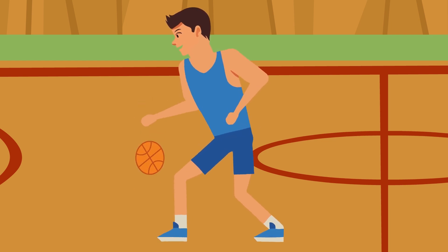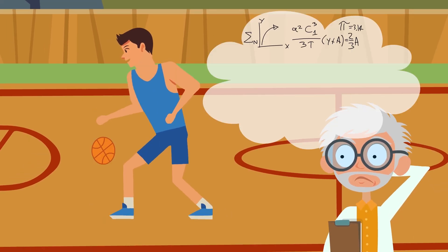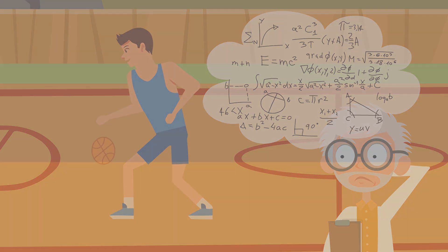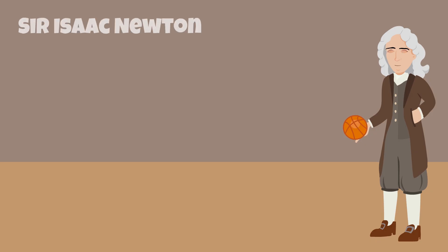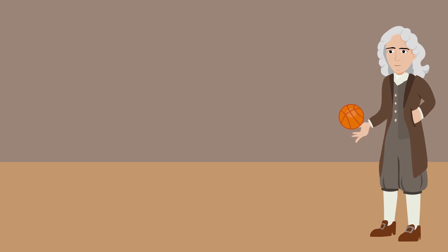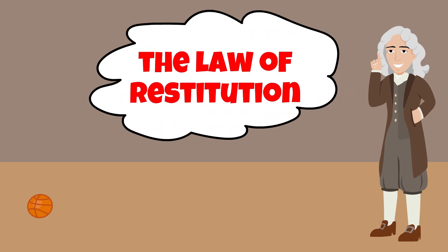When a basketball is bounced on a wooden floor, all we see is a ball moving up and down. Physicists, on the other hand, see a stream of equations that attempt to make logical and empirical sense of the whole floor and ball situation. One such physicist was Sir Isaac Newton. When he looked at a bouncing ball, it led him to propose a law we still use today to determine how bouncy a particular object is — the law of restitution.